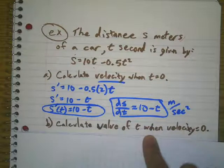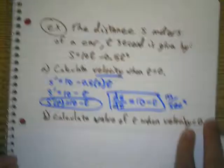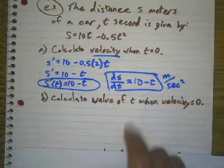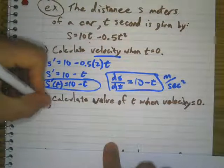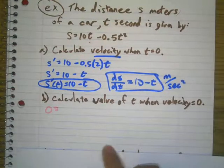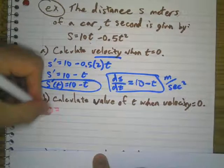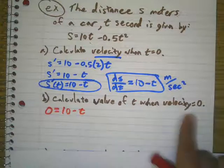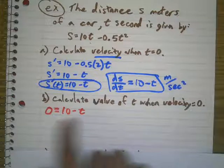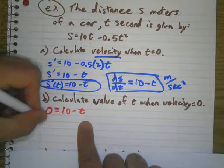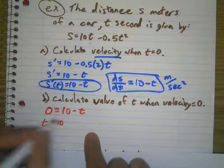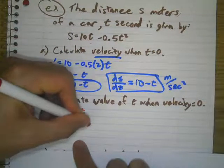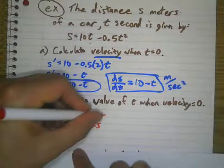Calculate when the velocity is going to be zero. So when is the velocity going to be zero? Well, I have to make the derivative equal to zero, right? So I'm going to say zero equals 10 minus t. Well, the velocity is going to be zero if I make t equal to 10. And given the units, it's going to be seconds. Don't forget those units.